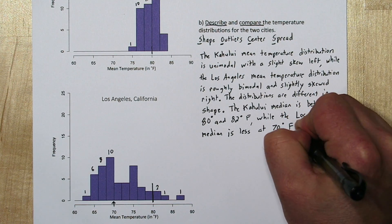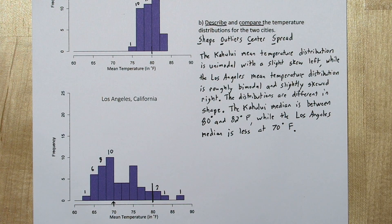Now by saying the word less, we actually put our comparison right into our description. So we're good with center.